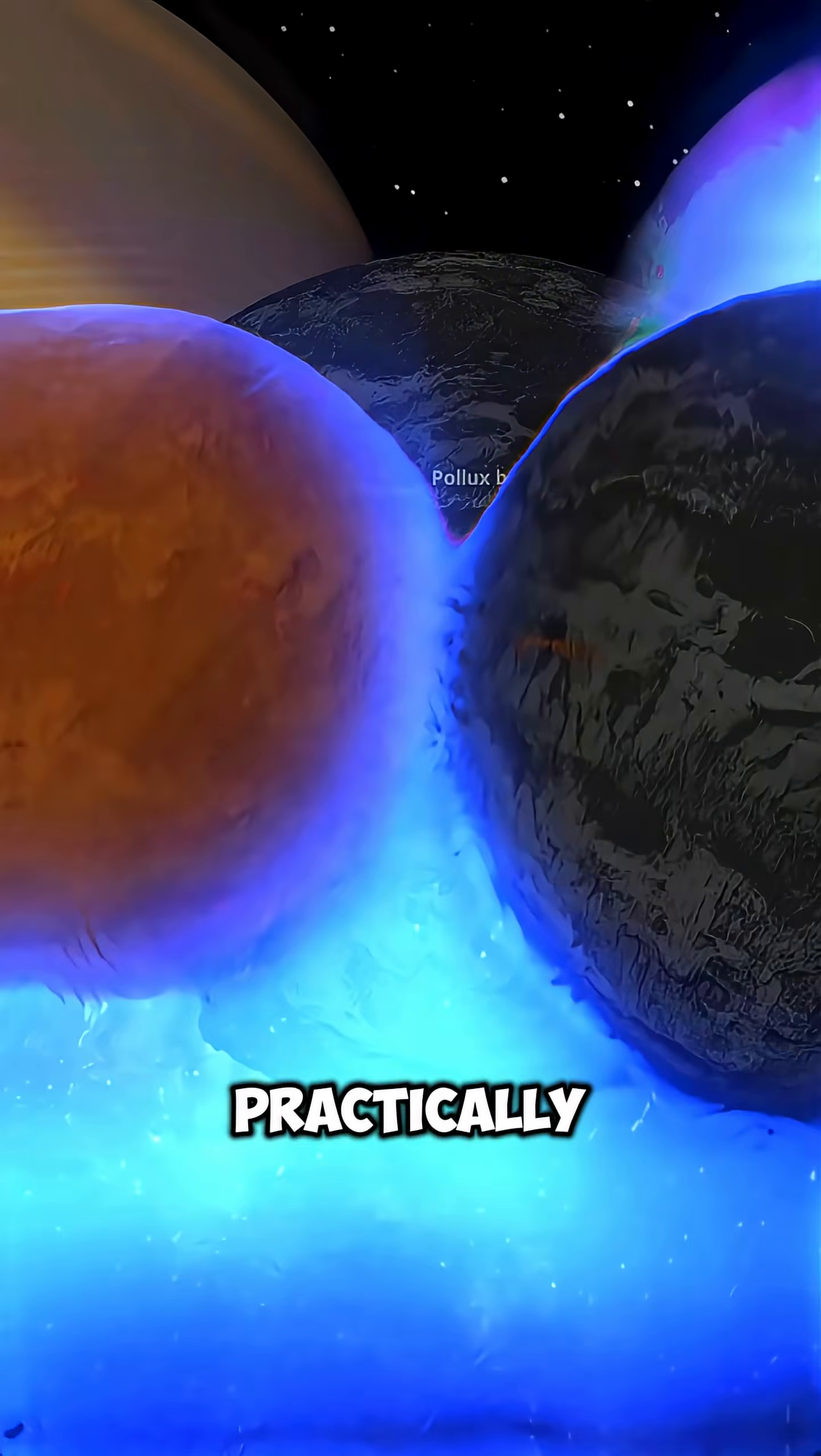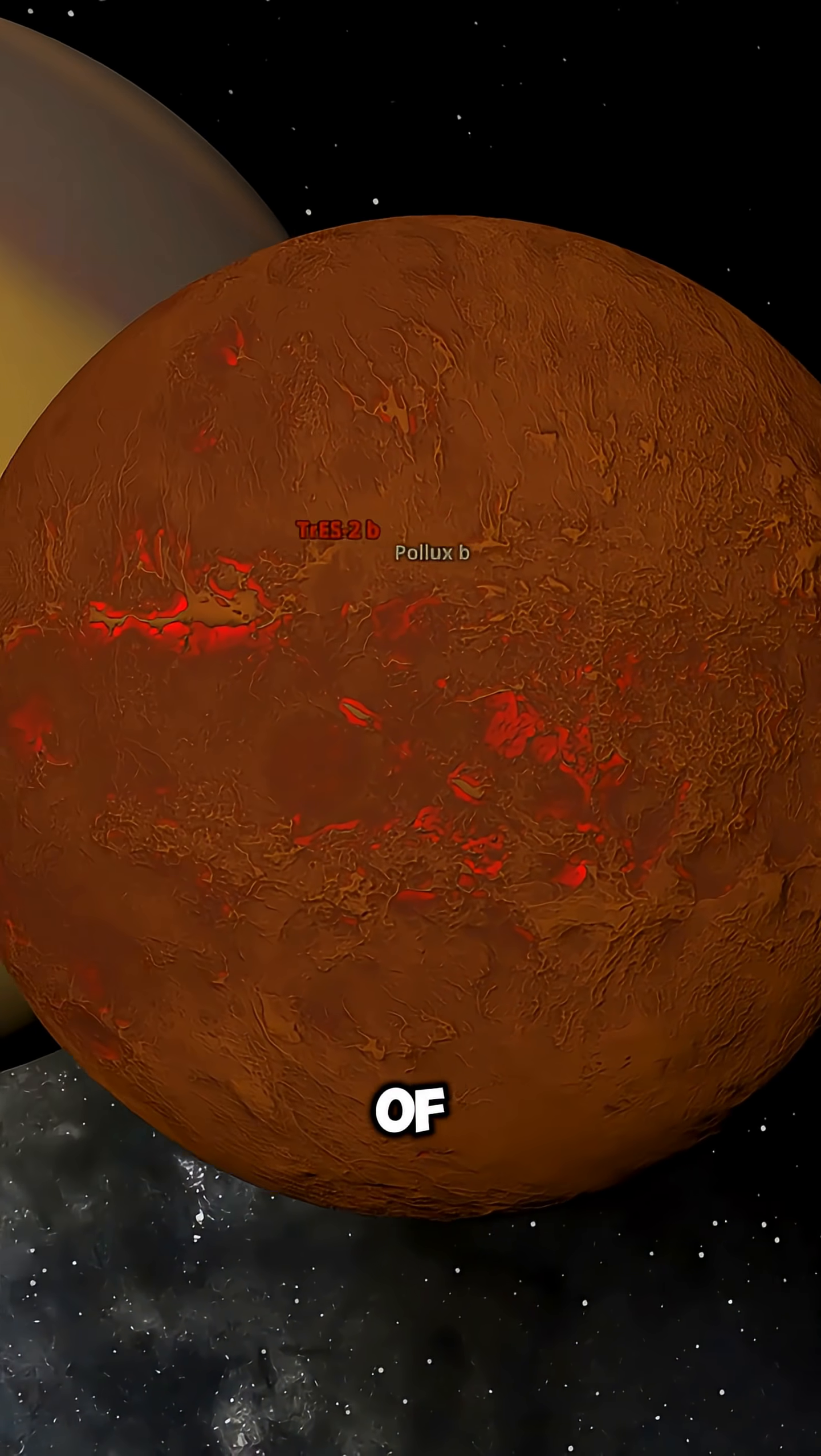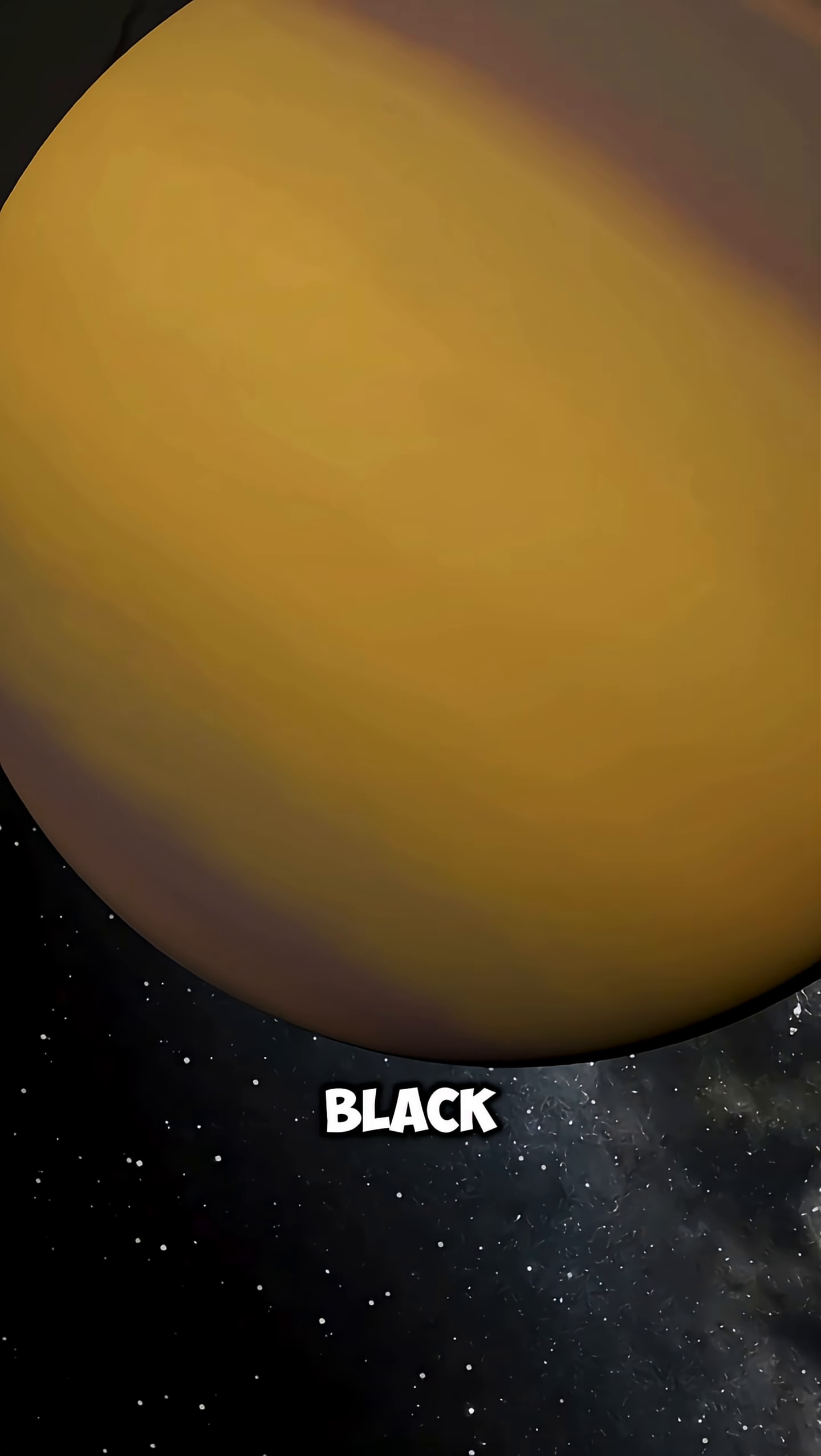And what about a planet that's practically invisible? Trez 2b reflects less than 1% of light, it's darker than coal. It's like a black hole in the shape of a planet.